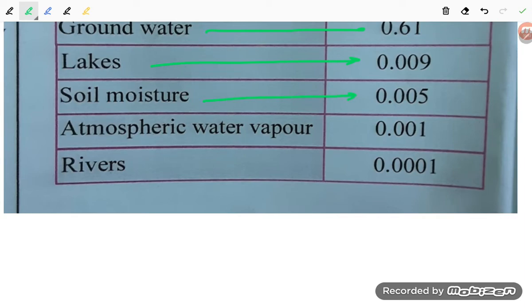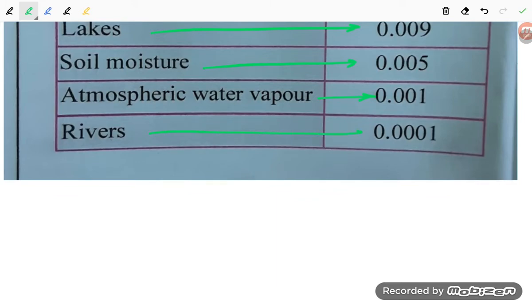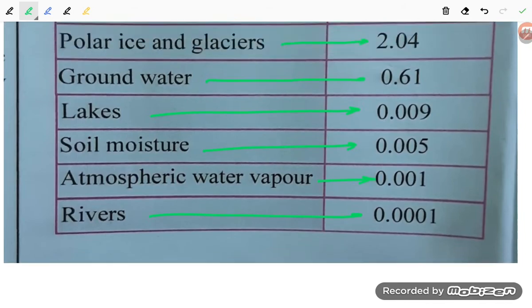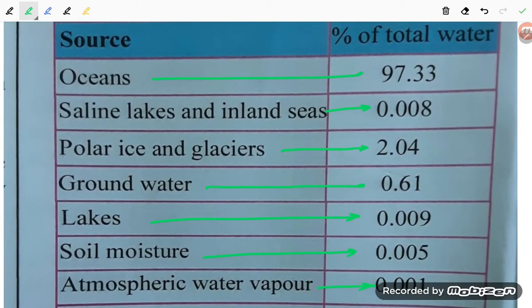Soil moisture 0.005 percent, atmospheric water vapor 0.001 percent, rivers 0.0001 percent. So this is the comparison of water, students. Mainly, 97.3 percent is the ocean water.